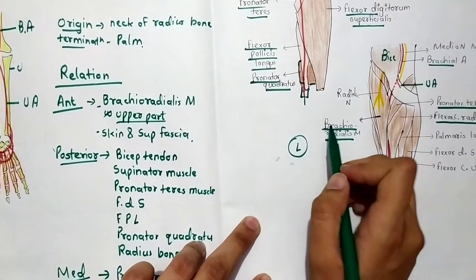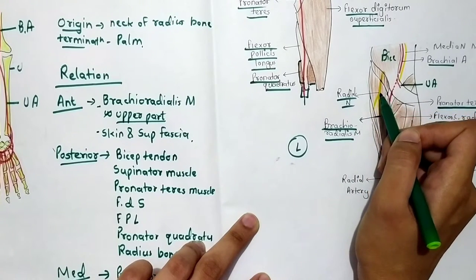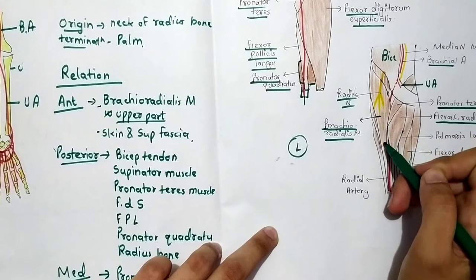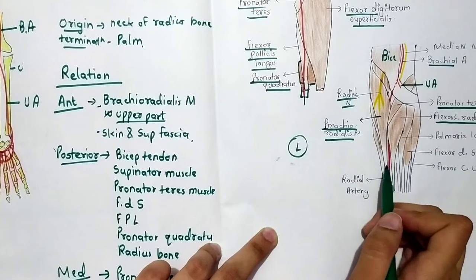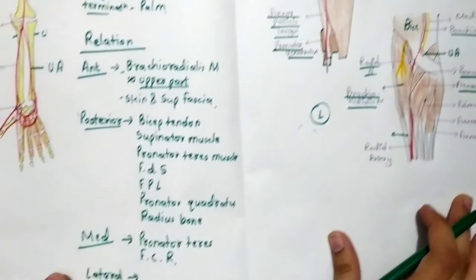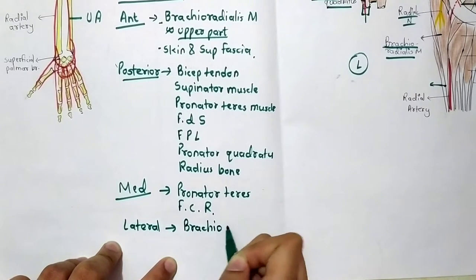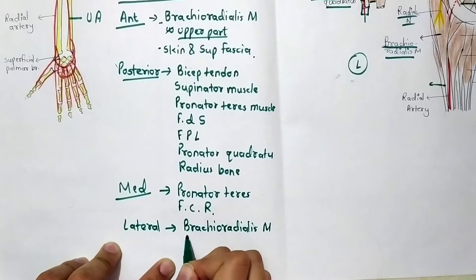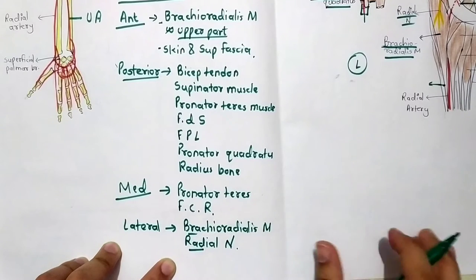For the lateral relation, there is the brachioradialis muscle and then the radial nerve. These two structures are in the lateral relation throughout its course — the brachioradialis muscle and the radial nerve. So the lateral relations are brachioradialis muscle and radial nerve.